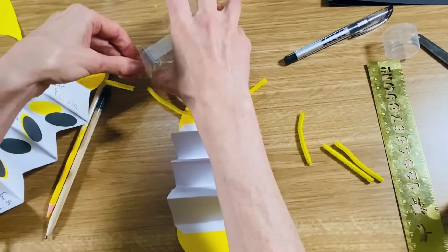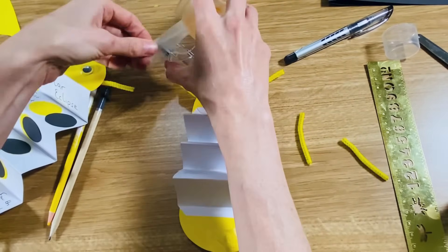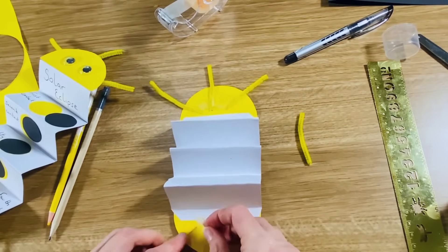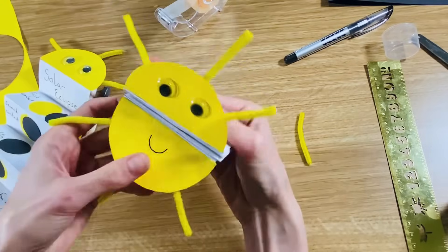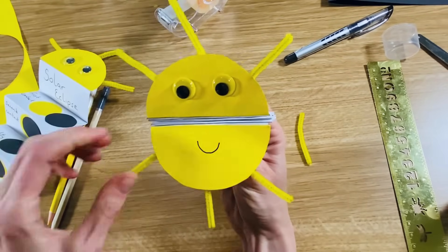One, two, three. And the good thing about these is you can adjust them slightly if they don't look quite symmetrical or if they're sticking up at a funny angle. You can just move them around a little bit so they look a little bit more even.